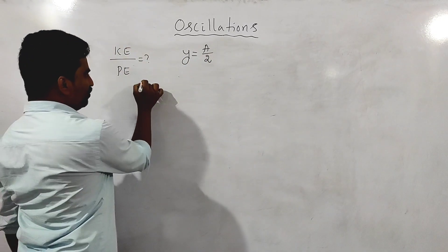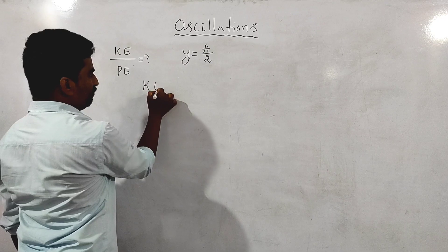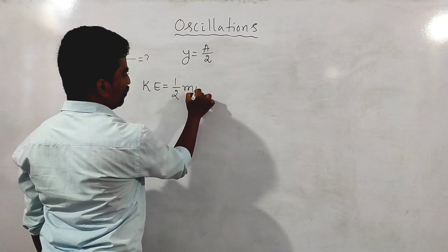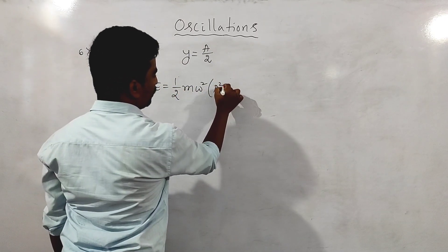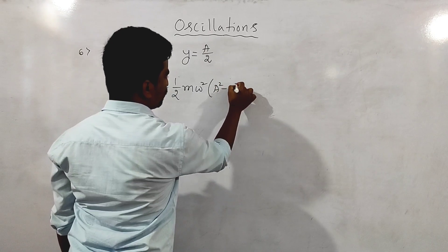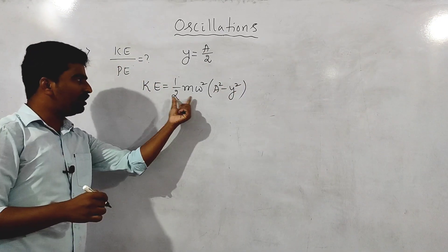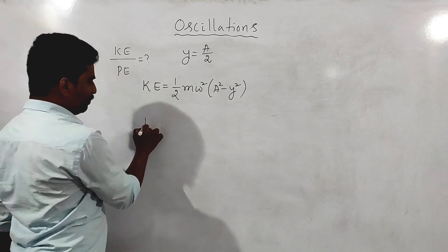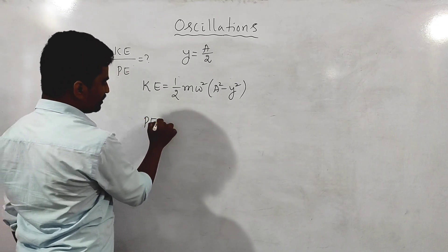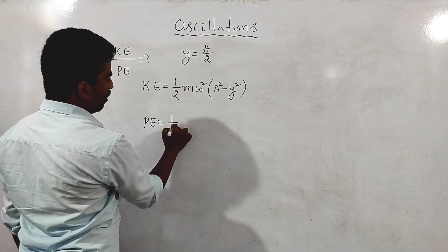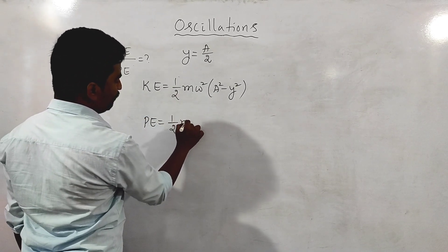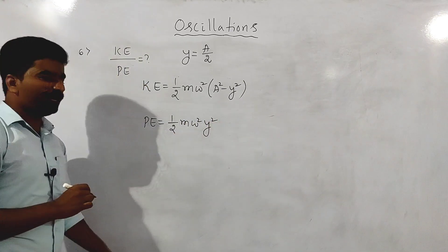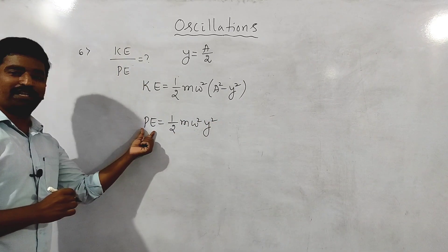We know that the formula for kinetic energy is half m omega squared a squared minus y squared. This is the general formula to calculate kinetic energy. The potential energy is equal to half m omega squared y squared. This is the general formula to calculate potential energy.